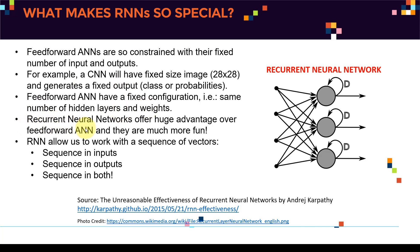Recurrent neural networks offer major advantages over feed-forward ANNs. First, they allow sequences of vectors — now I can have sequences in inputs, sequences in outputs, or sequences in both. This gives a lot more dynamics and the ability to capture a lot more intelligence compared to a basic vanilla feed-forward neural network. Let's take a look at practical examples of what makes recurrent neural networks so special.